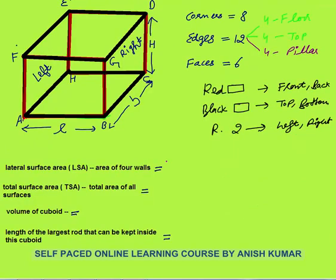Next, what is the lateral surface area of this cuboid? If you consider this cuboid as a room in your house, the area of 4 walls will be the lateral surface area. The area of the front wall will be L into H, since all surfaces are rectangles and the area of a rectangle is length into breadth. Since the front face and back face are congruent, the total area of front and back will be twice of L into H.